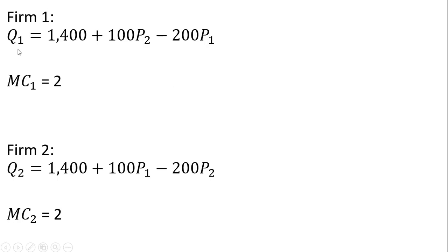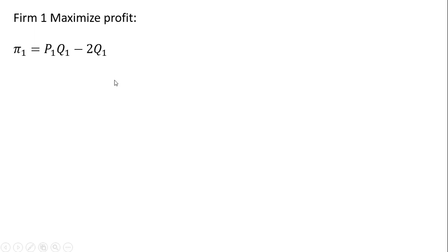So here's our setup. We have two firms. The output of firm 1 is given as follows. Firm 1 has a constant marginal cost of $2. Firm 2's output or demand is as follows. And firm 2 also has the same cost structure. Marginal cost is constant at $2.